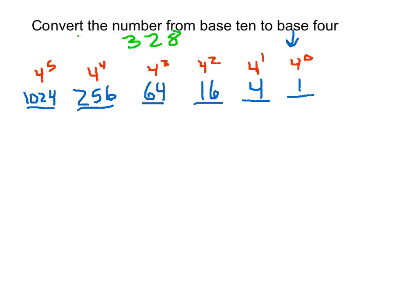Knowing that I'm converting this number to base 4, each column is going to be a power of 4, starting with 4 to the zero power, then 4 to the first, 4 squared, 4 to the third, 4 to the fifth, and so forth. So I label what each column in base 4 represents: the ones column, then the fours column, then the 16 column, the 64 column, 256, and 1024.